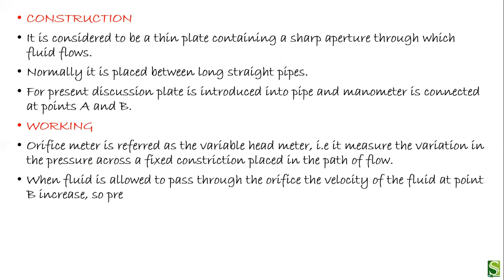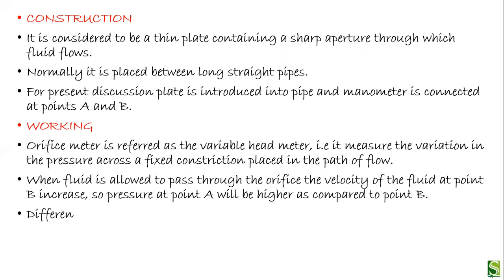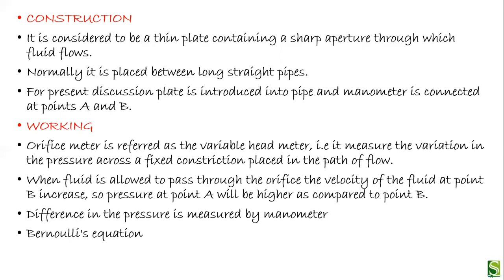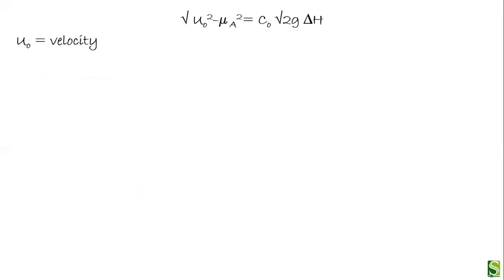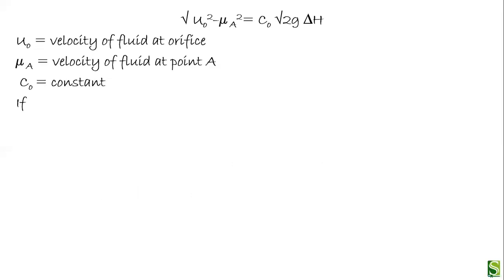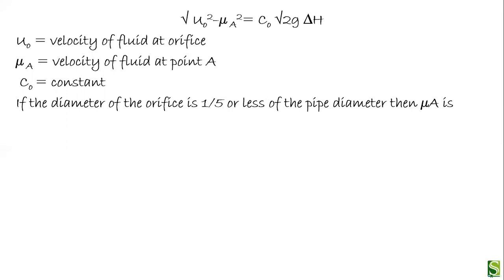When a fluid is allowed to pass through the orifice, the velocity at point B increases, so pressure at point A will be higher compared to point B. The difference in pressure is measured by the manometer. Bernoulli's equation is applied to points A and B. If the diameter of the orifice is one-fifth or less of the pipe diameter, then μA is neglected, giving μ₀ = C₀√(2g·Δh).